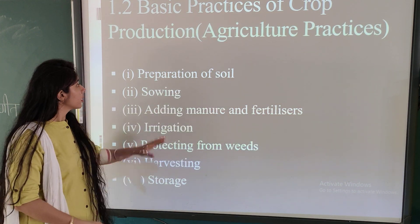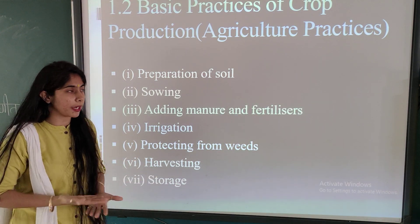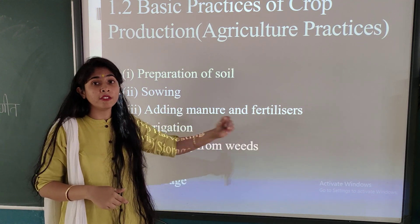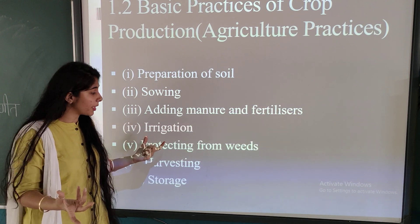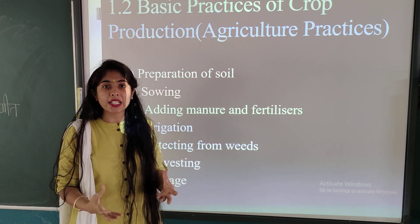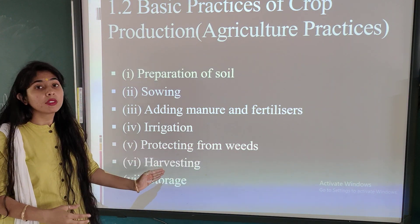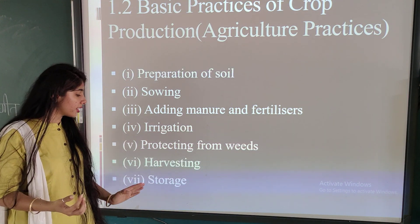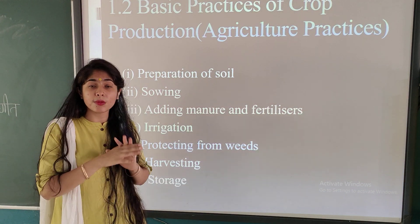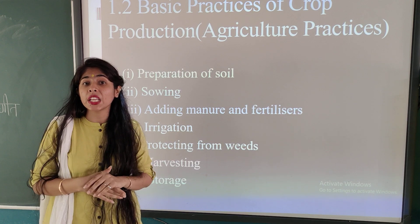The basic practices of crop production are: first, prepare the soil; second, sowing; third, adding manure and fertilizers; fourth, irrigation — providing water; fifth, protecting from weeds, which are unwanted plants that also grow in the crop and must be removed; sixth, harvesting the crop; and seventh, storing it properly. If it is not stored properly, everything will be wasted — energy will also get wasted, and economically it will be very harmful.